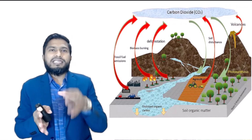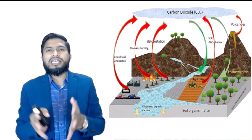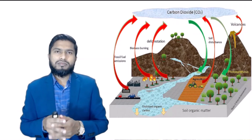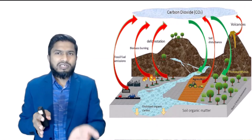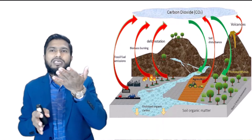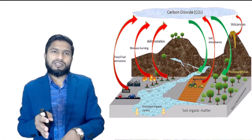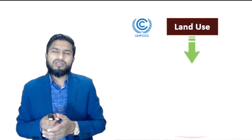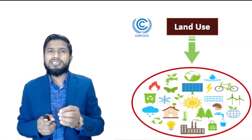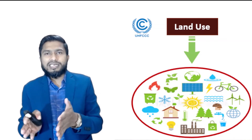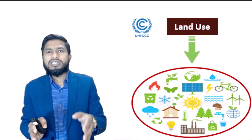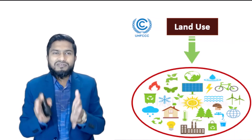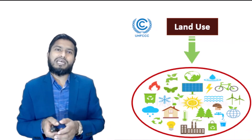Land plays an important role in the global cycle of greenhouse gases. Land use activities can result in emission of greenhouse gases to the atmosphere or removal of greenhouse gases from the atmosphere. The United Nations Framework Convention on Climate Change acknowledges that land use can significantly reduce energy consumption or achieve energy efficiency and minimize climate change.